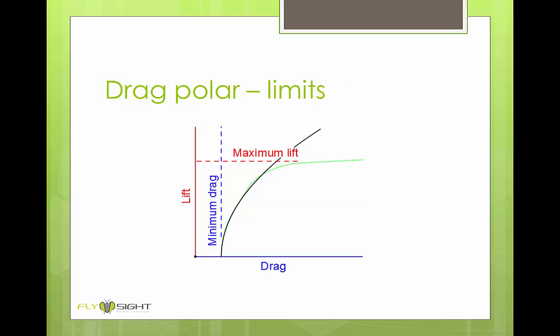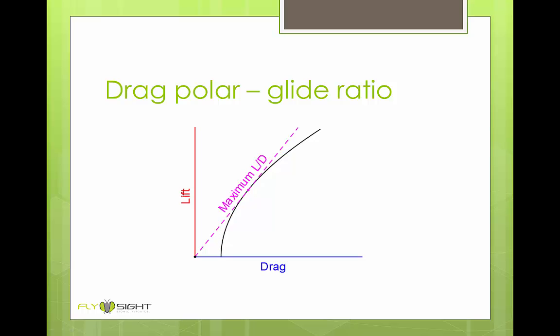We still have the two benchmarks we noted before, minimum drag on the left and maximum lift at the top. We also have a new benchmark, and that's the maximum L over D. We can draw this as a line that passes through the origin at the bottom left and touches the black curve at exactly one point.